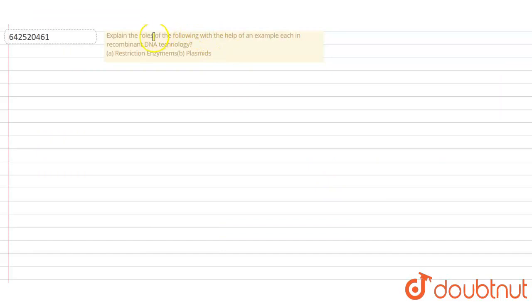Hello students, so today we are going to solve this question. Explain the roles of the following with the help of an example each in recombinant DNA technology: A. Restriction Enzymes and B. Plasmids. We have to solve this question. Let's start with the first one that is Restriction Enzymes.